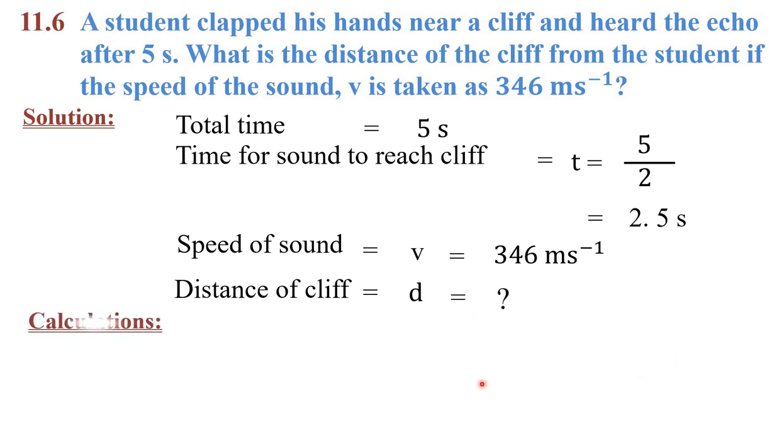To aapko maloom hai distance ka simply formula hota hai V multiplied by T jab kisi body ki velocity ya sound ki velocity uniform ho to tab distance equals to V multiplied by T.